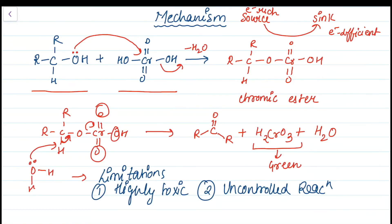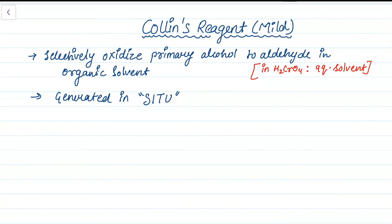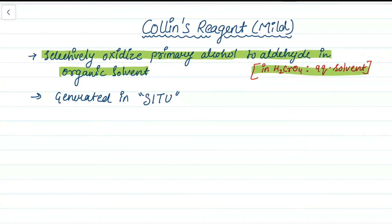Scientists therefore discovered a milder reagent that could stop the reaction at aldehyde — Collins reagent. Collins reagent selectively oxidizes primary alcohols to aldehydes in an organic solvent. This solves the overoxidation problem. Also, while chromic acid is used in aqueous solvent, Collins reagent uses organic solvent, which is an additional advantage for most organic reactions.